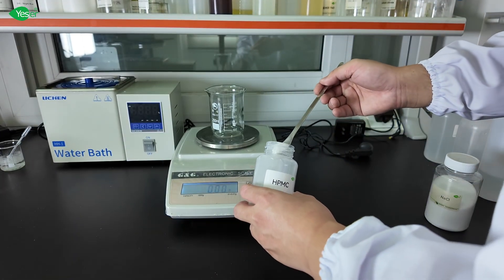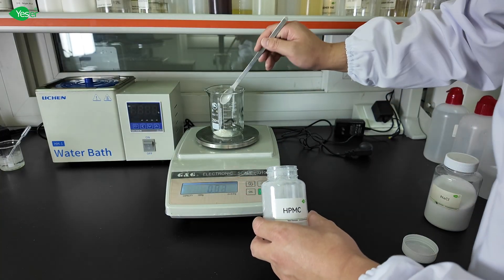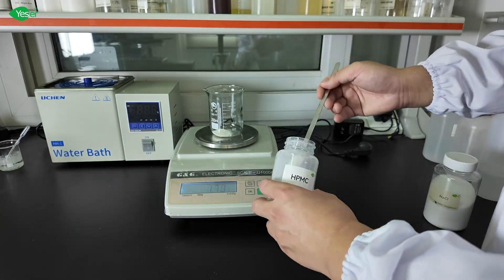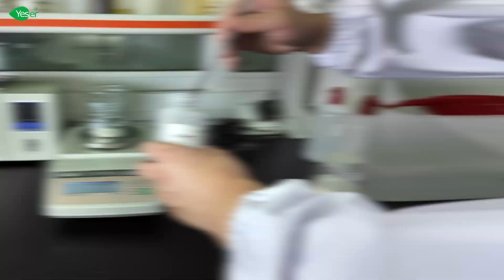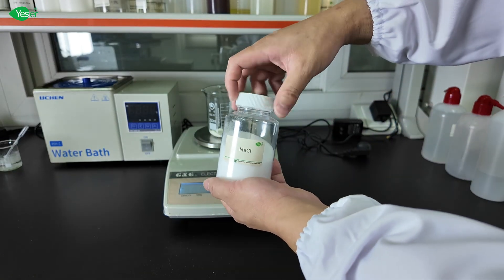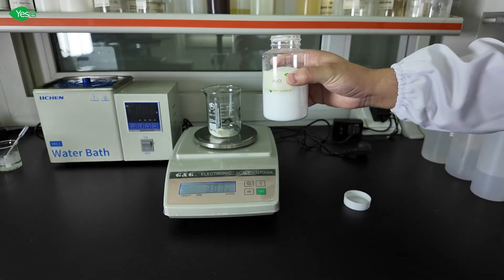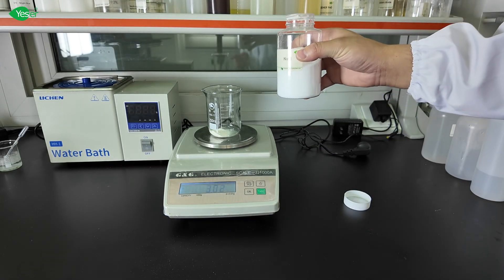Now let's add 3 grams of HPMC into this beaker. Now let's add the salt to the beaker. Make sure the HPMC to salt ratio remains the same as in your actual formula.